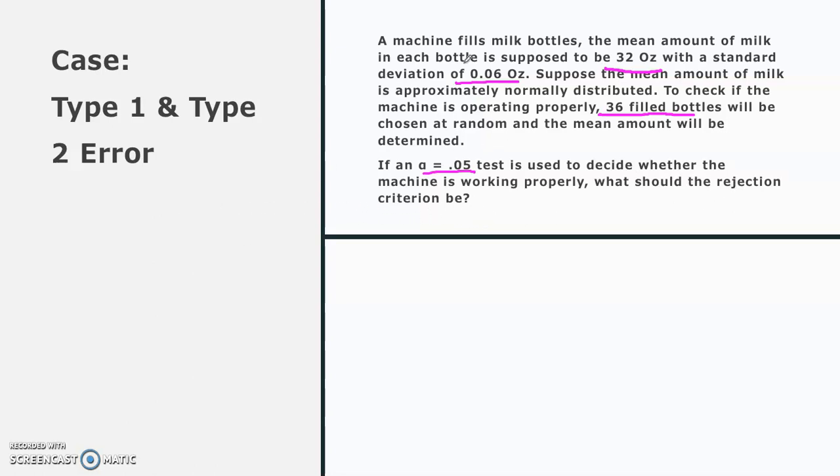So if we draw the case in a normal distribution probability, then we will have it like this. Let's draw here the line. This is for the z and this is for the x. And we know that the mean is 32 with standard deviation of 0.06.